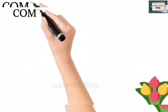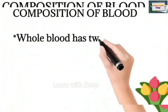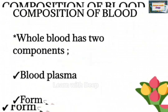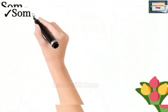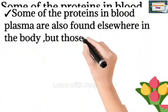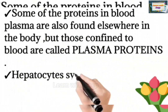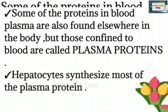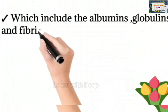The composition of blood has two components. First is blood plasma and second is formed elements. Blood plasma contains proteins. Some proteins in blood plasma are also found elsewhere in the body, but those confined to blood are called plasma proteins. Hepatocytes synthesize most of the plasma proteins.